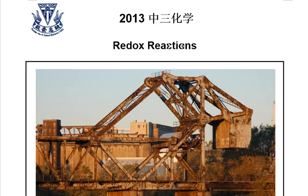Welcome to the O-Level Chemistry Lecture Series. Today's topic is on redox reactions. Before we begin, let's examine some simple examples of redox reactions around us. If you look around, you will find something which is rusty. Rust formation is actually a redox reaction — a simple redox reaction involving iron, oxygen, and water.